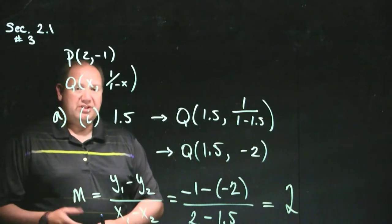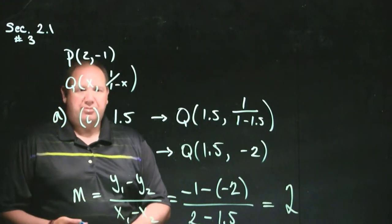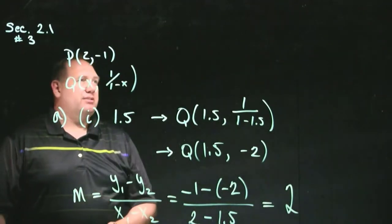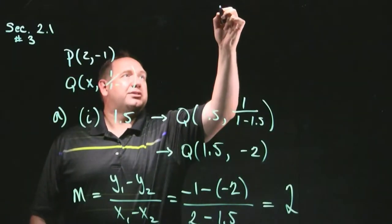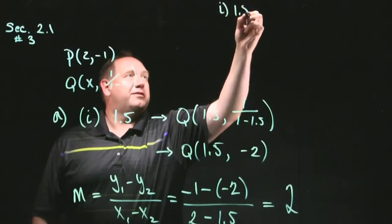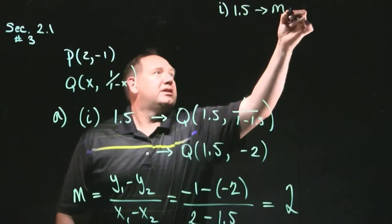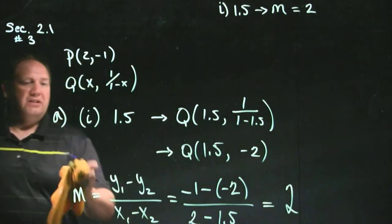And when I simplify that in my calculator, I got 2. So the slope of the secant line between p and q, when q is the point evaluated at 1.5, works out to be 2. I'm going to make a little chart to remind us what all these values are. So i, which was 1.5, that corresponds to the slope m equaling 2.